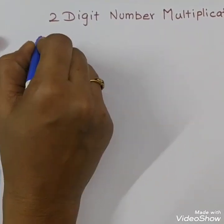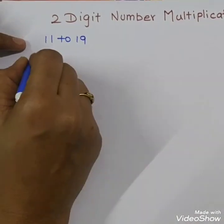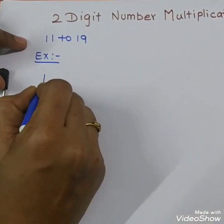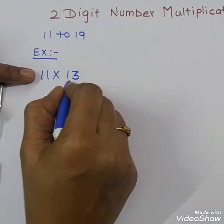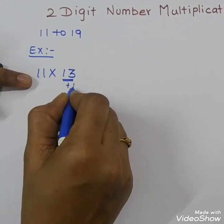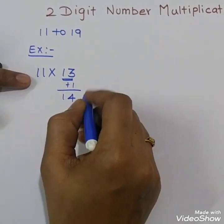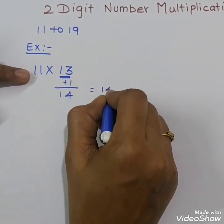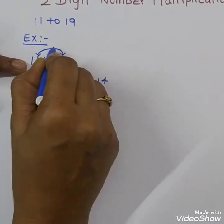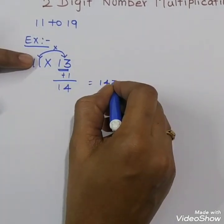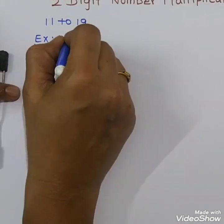First we see for 11 to 19 numbers how to multiply. For example, 11 into 13. First step: add 1 to this number. The answer is 14. Next step: multiply these 2 digits — 1 times 3 is 3. So the answer is 143. This is the first example.